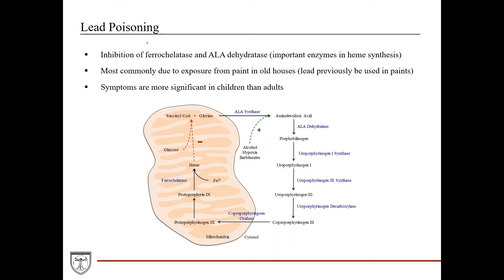Lead poisoning really wreaks havoc across the body, and at the biochemical level, what we want to pay attention to is it inhibits a couple of important enzymes in heme synthesis. It inhibits ferrochelatase, which is the last enzyme in heme synthesis that takes iron and adds it into protoporphyrin-9 to give you heme. It also inhibits ALAD hydratase, which is an enzyme more proximal in the pathway. So it really disrupts heme synthesis within the mitochondria.